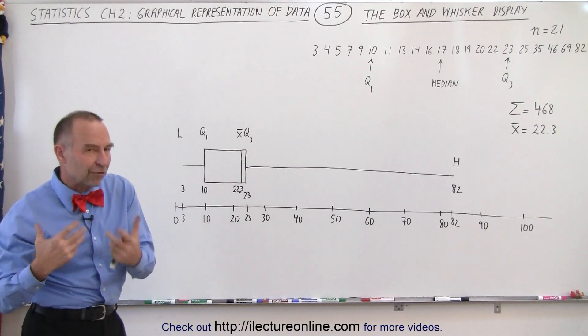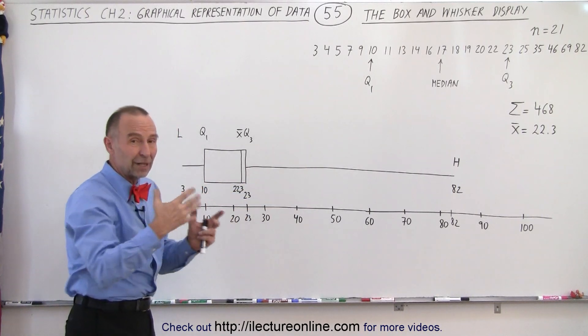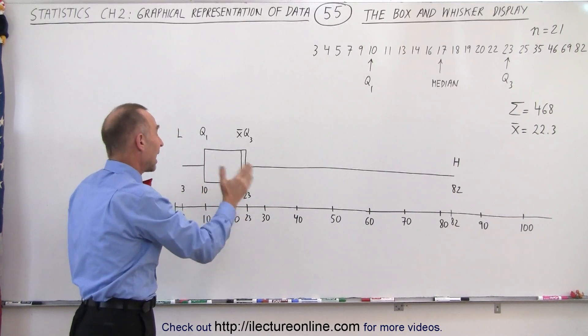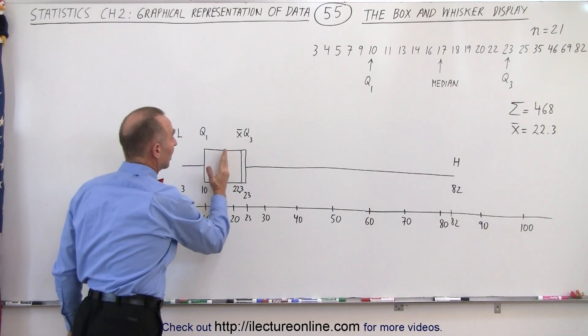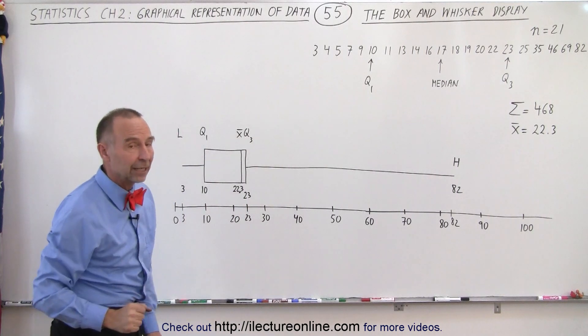The average value would give you kind of a false impression because of those outliers that the numbers in the middle of the data pack are much bigger than they actually are. The numbers in the middle of the data pack probably fall more in this range than in the average value that we actually calculated.